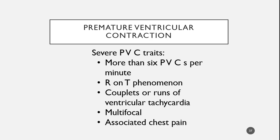R-on-T phenomenon — basically when the R-wave gets too close to the T-wave, it can cause the heart to stop. If a patient begins having PVCs and it looks like it's occurring on the downslope of the T-wave — that's the relative refractory period — an impulse that hits there puts our patient into ventricular fibrillation. If we've got the patient on a monitor, we shock the patient and almost always it will convert them, but it doesn't mean they won't go back into it.